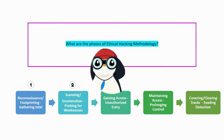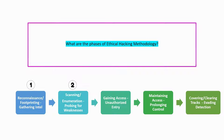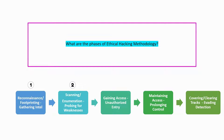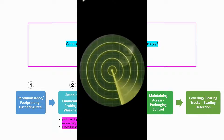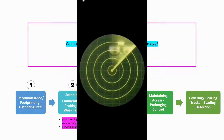The 2nd step is about scanning and enumeration, i.e. probing for weakness. Ethical hackers use various tools and techniques to scan the target system or network for vulnerabilities. This includes port scanning, vulnerability scanning, network mapping, and other such activities.